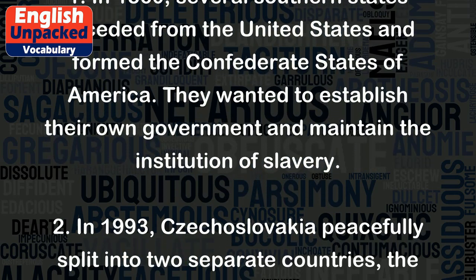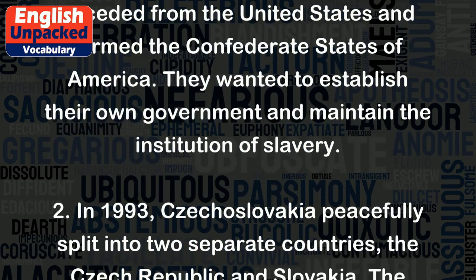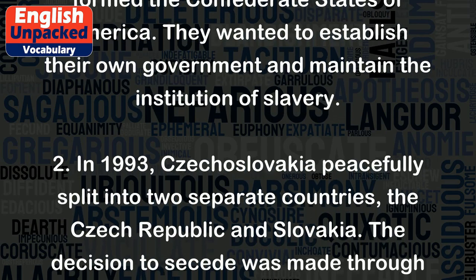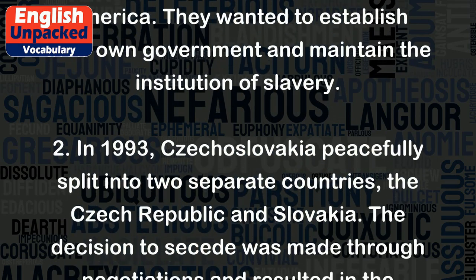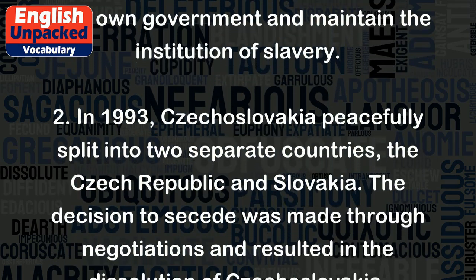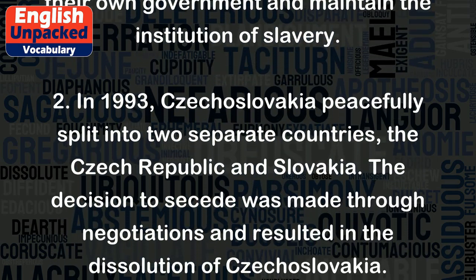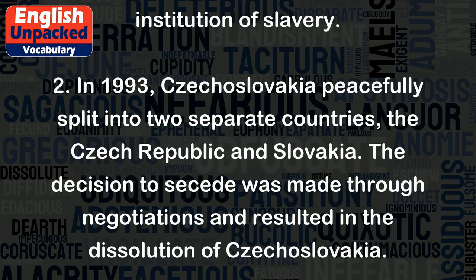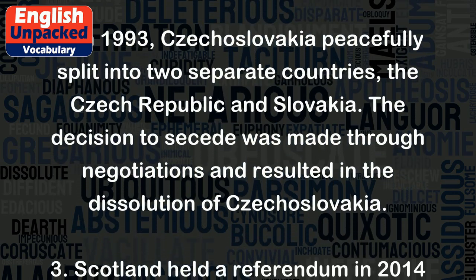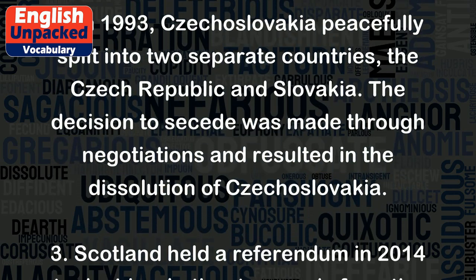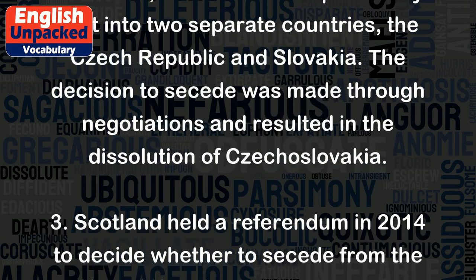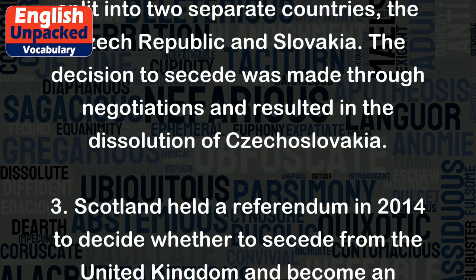2. In 1993, Czechoslovakia peacefully split into two separate countries, the Czech Republic and Slovakia. The decision to secede was made through negotiations and resulted in the dissolution of Czechoslovakia.